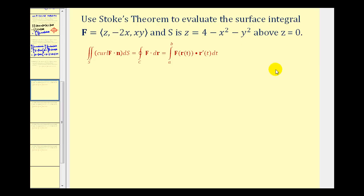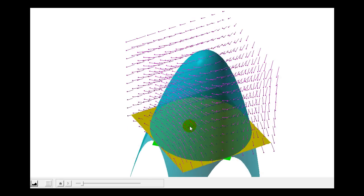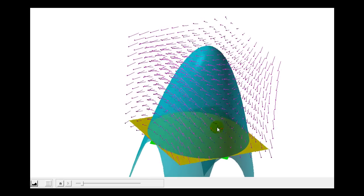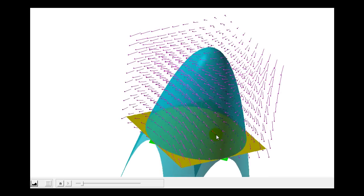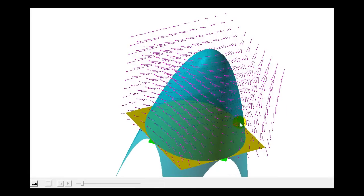So let's go ahead and take a look at this graphically first. So our surface is this blue surface above the yellow plane. So our curve C would be the circle in the XY plane.